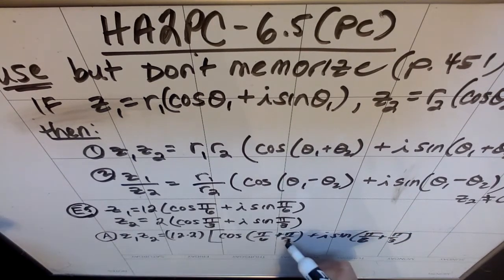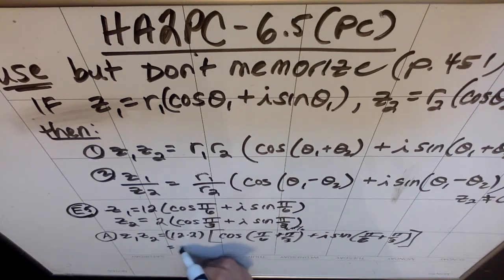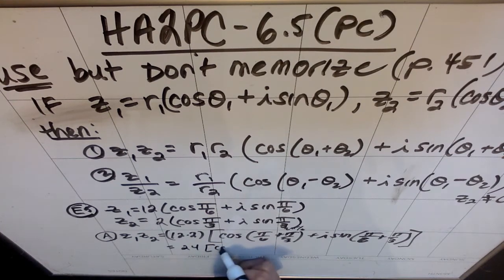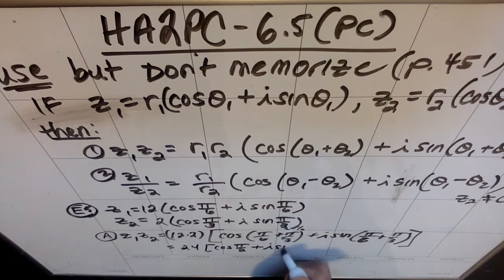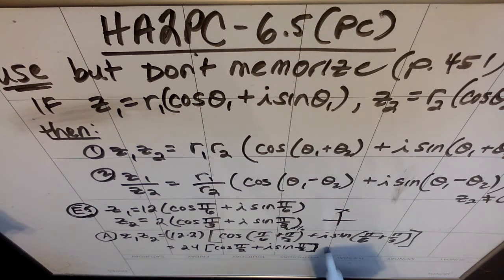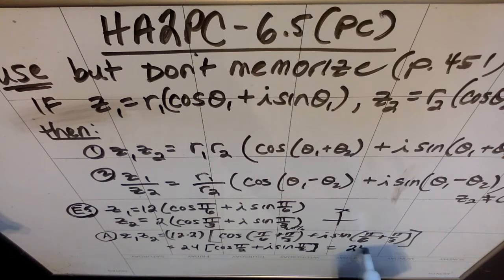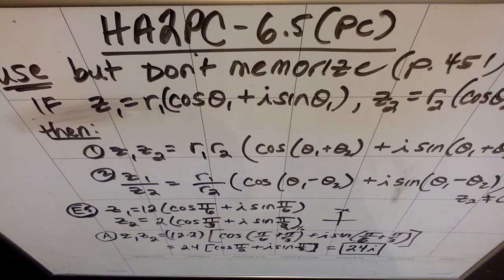So I noticed that pi over 3 is 2 pi over 6, so really I'm getting 3 pi over 6 in here. So I'm pretty sure what I get is 24 times the cosine of 3 pi over 6, which is pi over 2, plus i sine of pi over 2. And I know that pi over 2 on my unit circle is right here, and the cosine of pi over 2 is 0, and the sine is 1, so I end up just getting that this answer is 24i, or you could write 0 plus 24i, that's fine, but that's it.